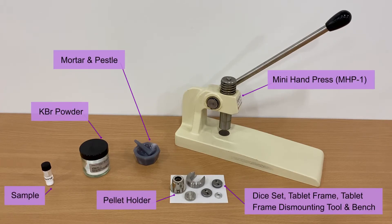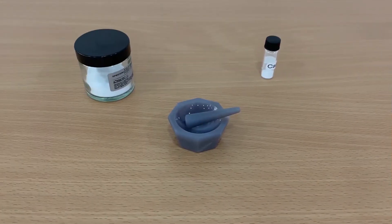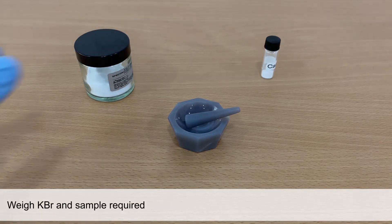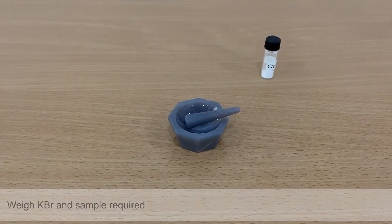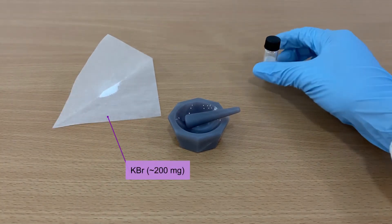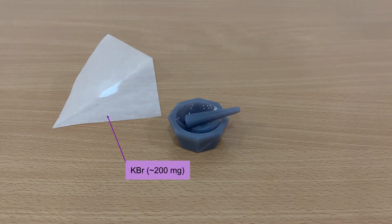Here are the items you are going to need. First, we are going to weigh the KBr powder and sample powder required. Approximately 1-2 mg of sample is mixed into 200 mg of KBr powder.